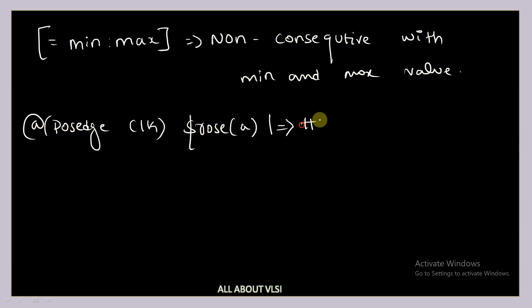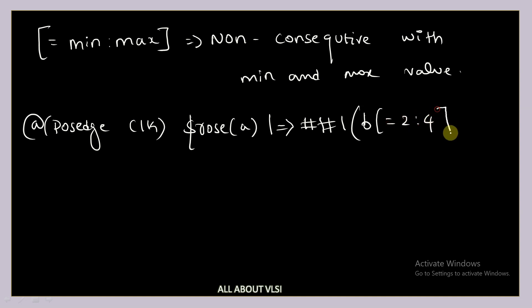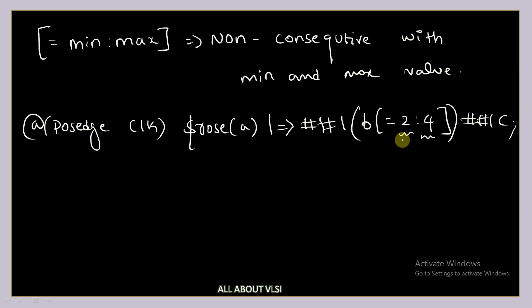We can also have ranges here. For example: a, hash 1, b with '=2:4', hash 1, c. This is a minimum value of 2 and a maximum value of 4. That means the value of B can be repeated consecutively or non-consecutively for two to four cycles. Let me draw a waveform for better understanding.